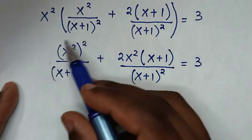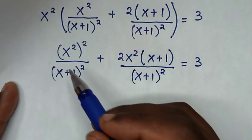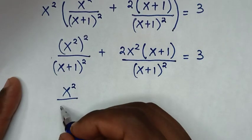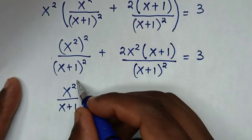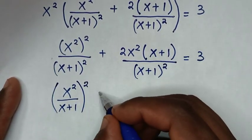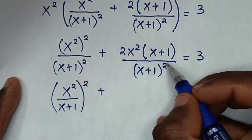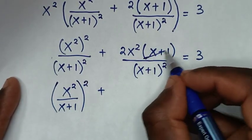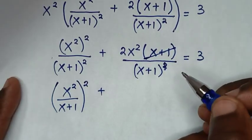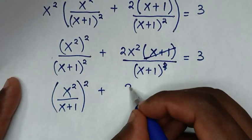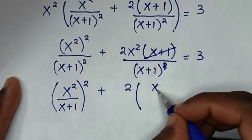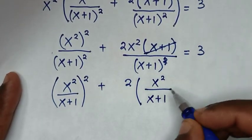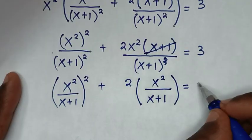Then from here, (x²)² is common, so it will be x²/(x+1)², then plus. To simplify 2x²(x+1)/(x+1)²: the (x+1) in the numerator cancels one factor of (x+1) in the denominator, so it becomes 2x²/(x+1), equals 3.